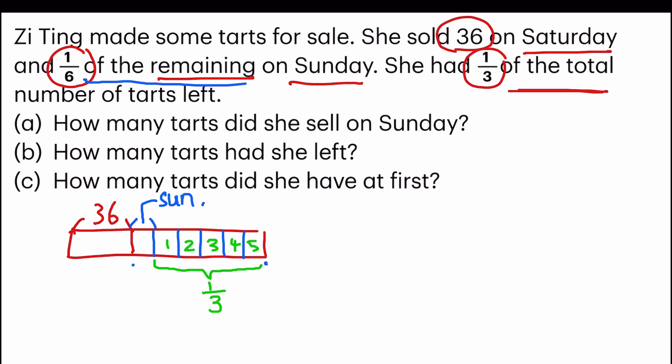So I am going to equate this to five units that we have cut up. And if that is equal to one-third, which means this part from the 36 and Sunday tarts sold on these two days would be two-thirds. Because two-thirds and one-third makes up one whole, which is everything that she had.